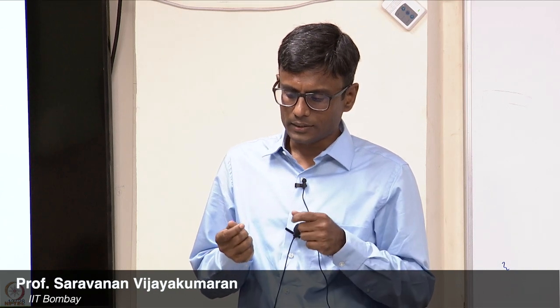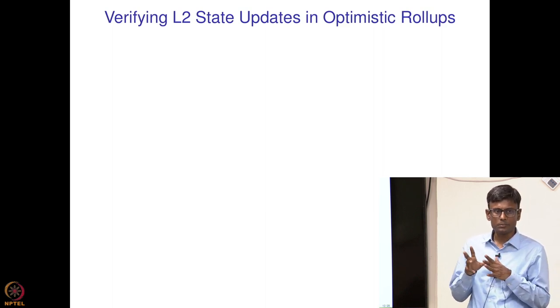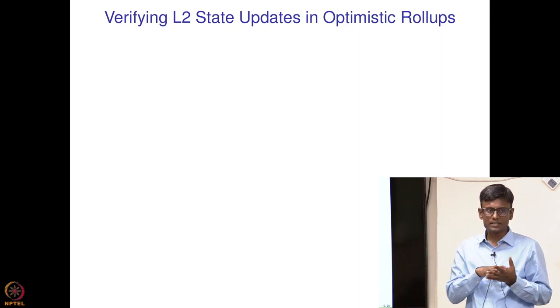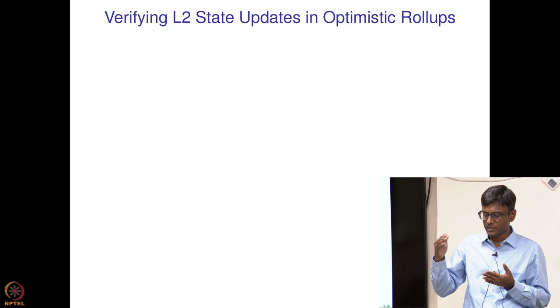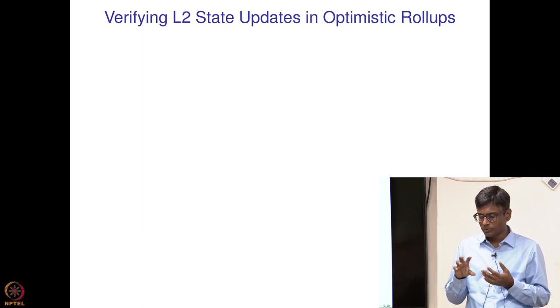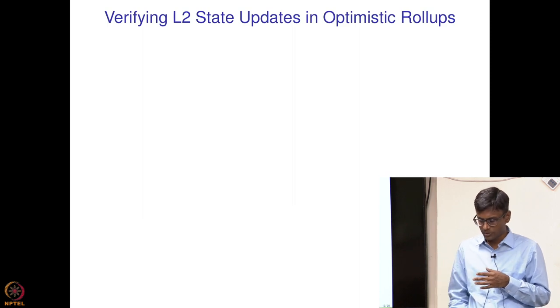What about optimistic rollups? Optimistic rollups use something called fault proofs. They are called optimistic because when a new state root is added, the bridge contract corresponding to an optimistic rollup is not verified as correct right away. We optimistically think it is correct and move forward, but at a later stage it can be proved faulty. Somebody can give a fault proof to prove that a state root was incorrect, and then that state root will be rejected.